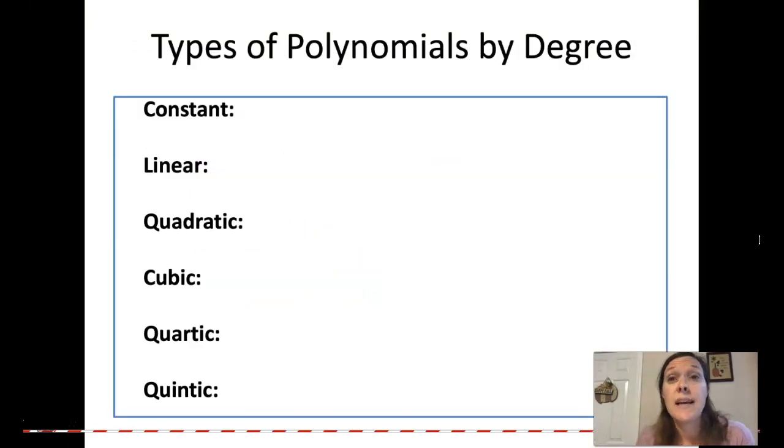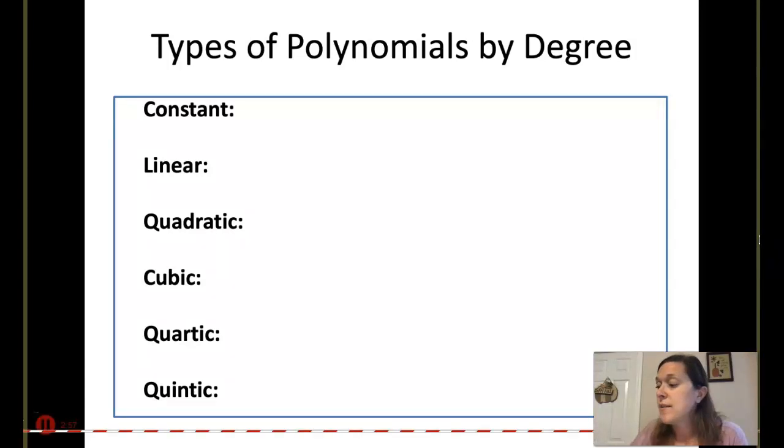How do we classify types of polynomials? We classify them by the degree and by the number of terms. These are the different names to classify the degree. If your degree is 0, there would be no variable. If you have an exponent of 0, that's just 1, we call that constant. So if your degree is 0, that's constant - there's no variable attached to it, just the constant number.